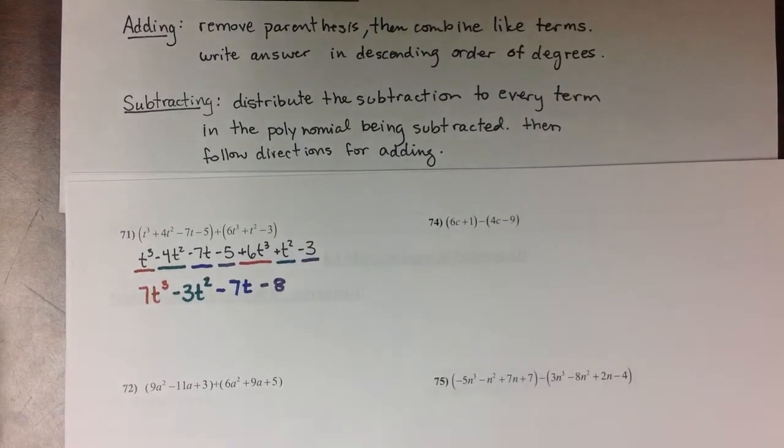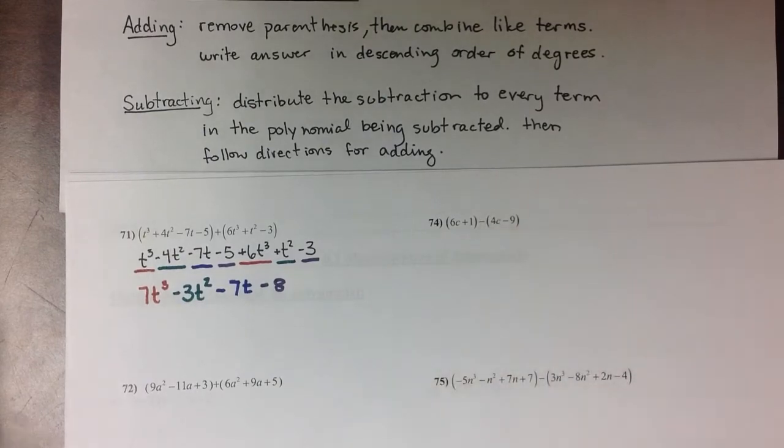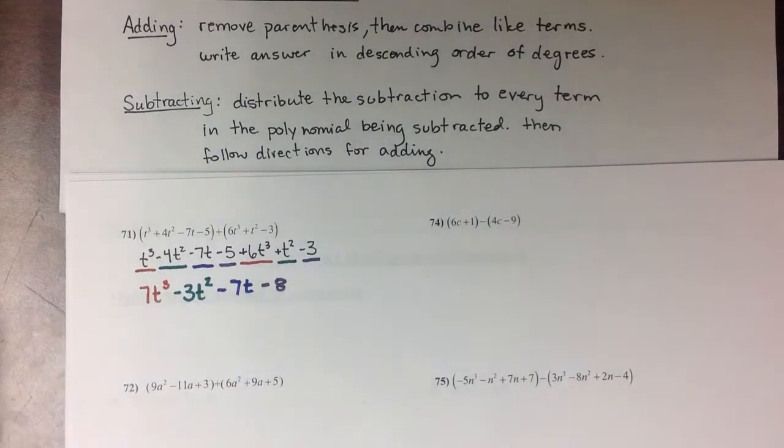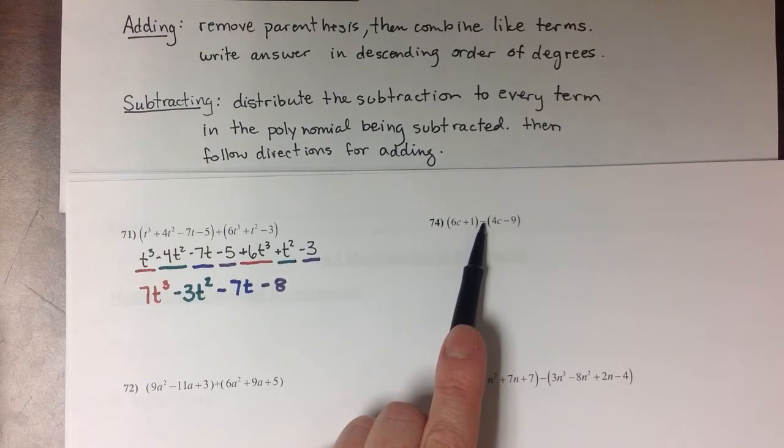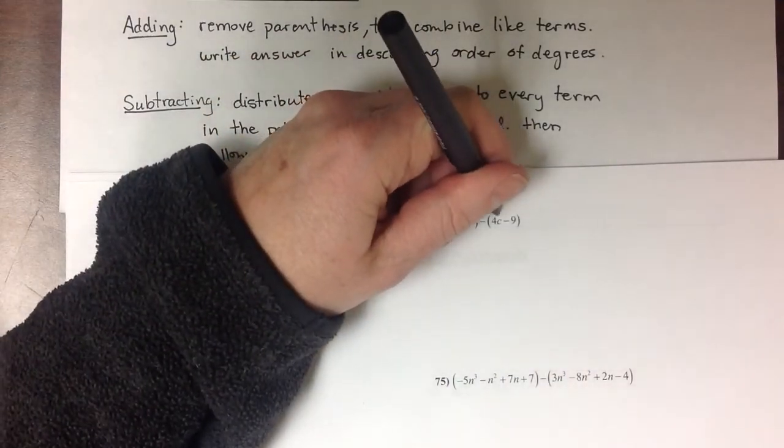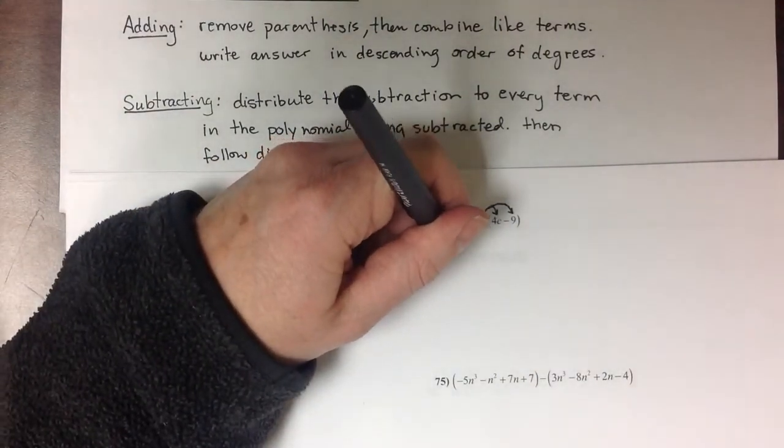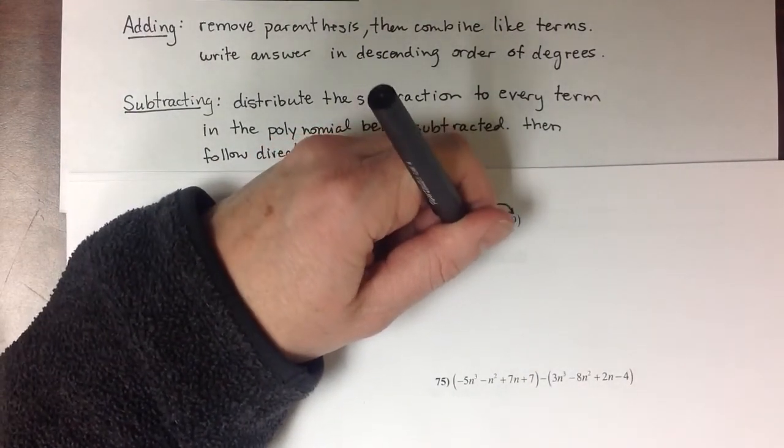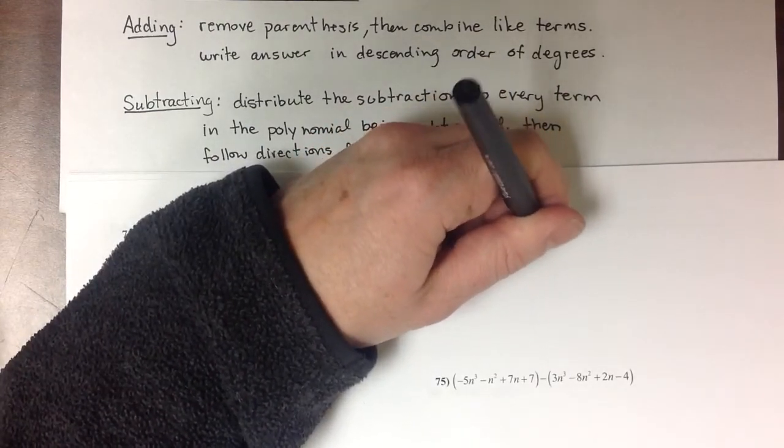So in number 74, we're doing subtraction. So the subtracting rules say that you need to distribute the subtraction to every term in the polynomial that's being subtracted. Because it's not just the 4c that that negative applies to. We're also subtracting a -9. So when we rewrite this polynomial with that subtraction distributed, we're going to have 6c + 1 - 4c + 9.